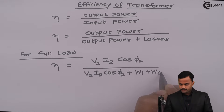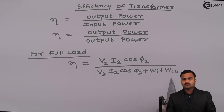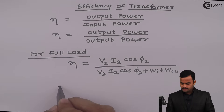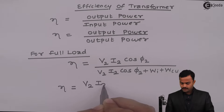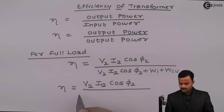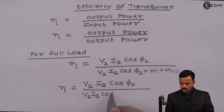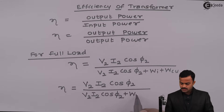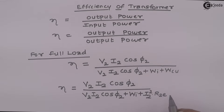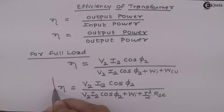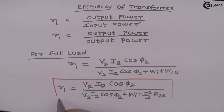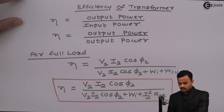So we can write efficiency equal to V2 I2 cos Phi 2 upon V2 I2 cos Phi 2 plus iron losses WI plus copper losses WCu. The copper loss depends upon current so it can be written as I2 squared R2E, where R2E is the resistance referred to the secondary side. This is the formula for efficiency when full load is applied.